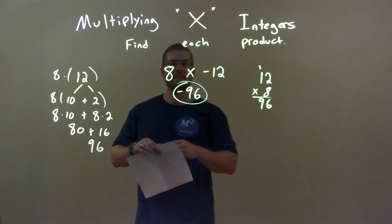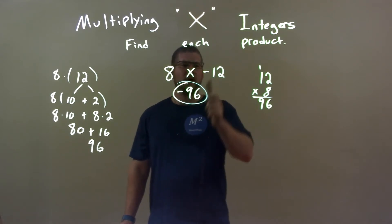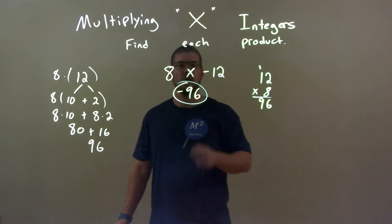So quick recap, we're given 8 times a negative 12. Well, 8 times positive 12 is 96, and positive times a negative is a negative. So again, final answer, negative 96.